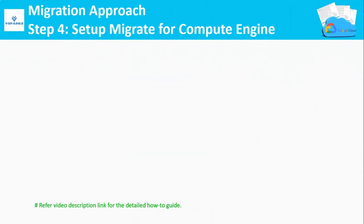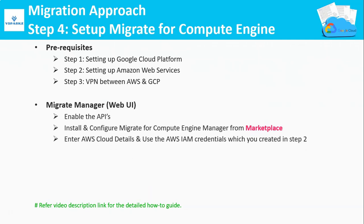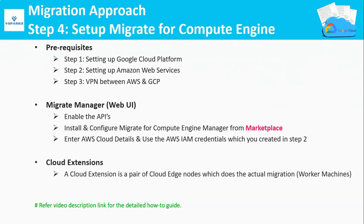Step 4: Set up Migrate for Compute Engine. Before executing step 4, you should have completed steps 1, 2, and 3 — that's going to be our prerequisite. Next, you need to install and configure Migrate for Compute Engine from Google Cloud's Marketplace. Once you install the Migration Manager, log in to the web console and create the cloud extension, which will create a pair of worker nodes to do the actual migration task.